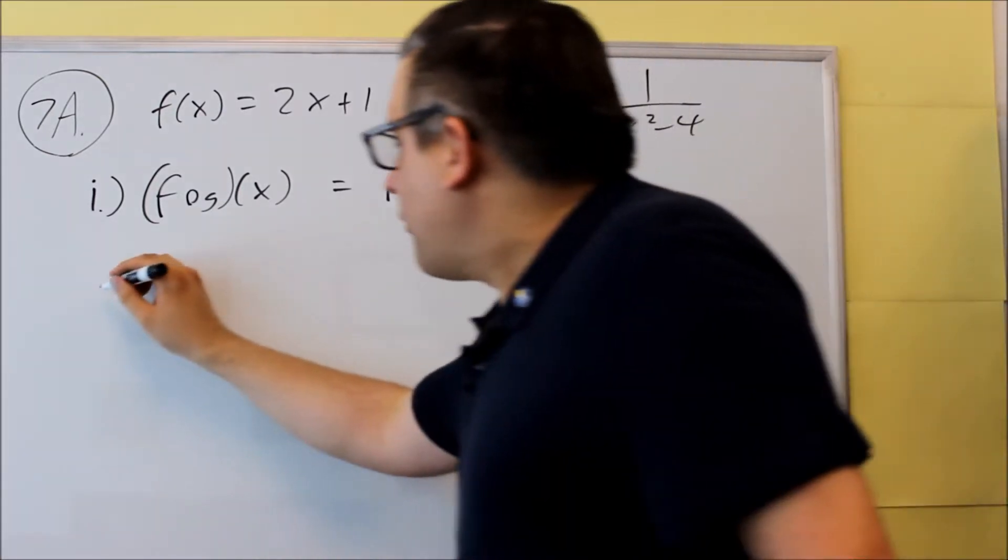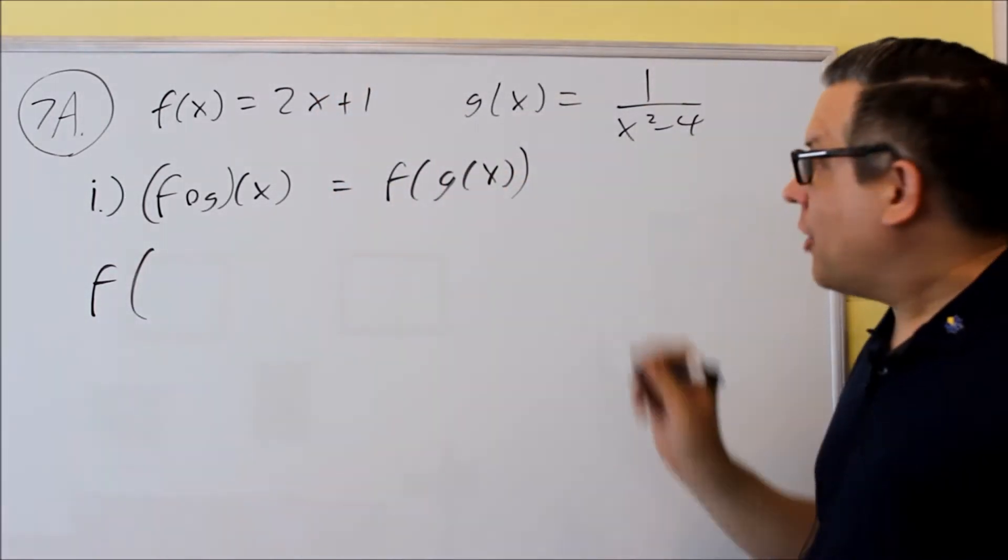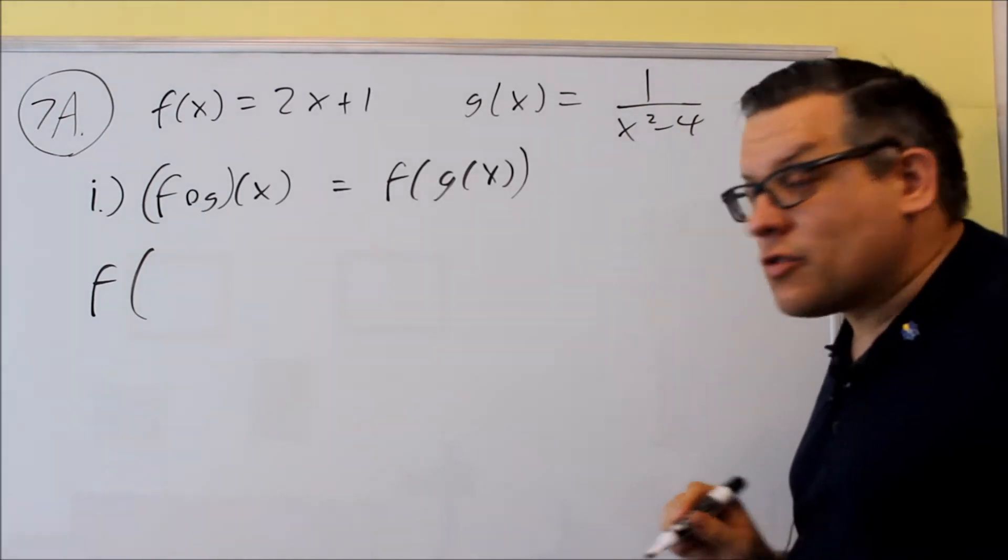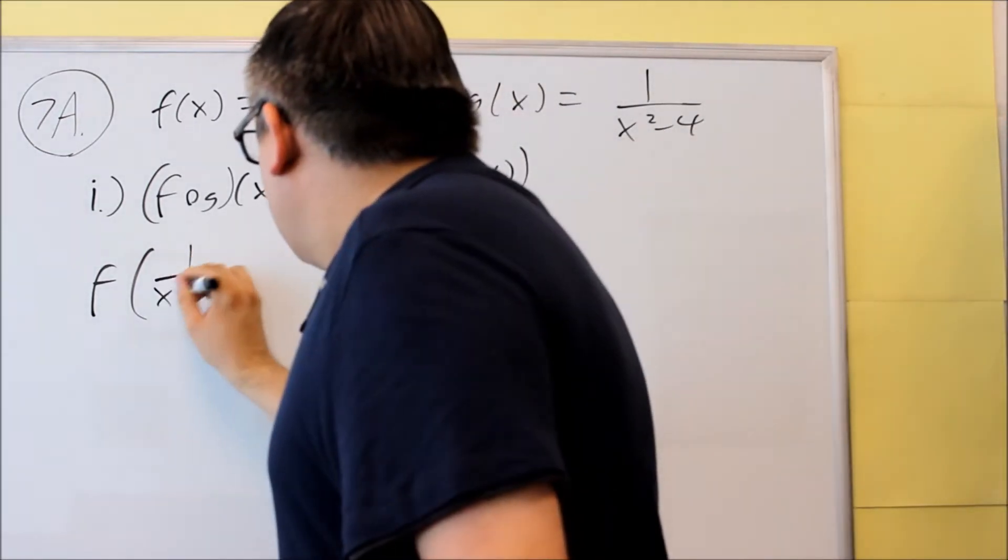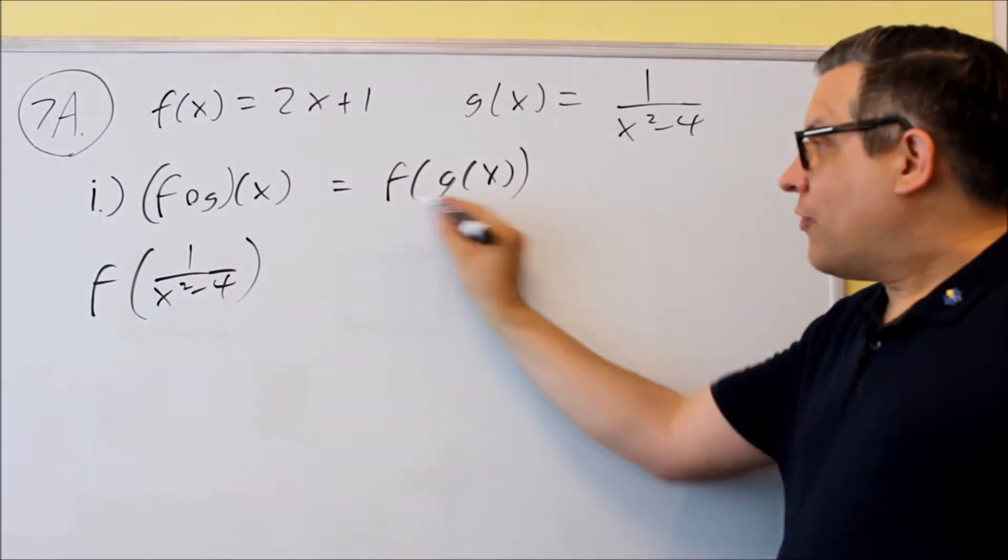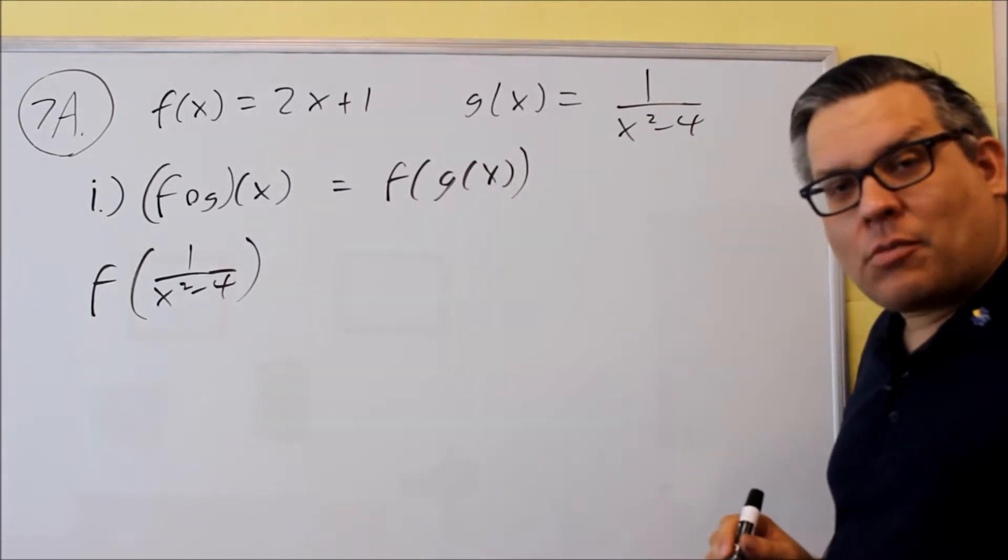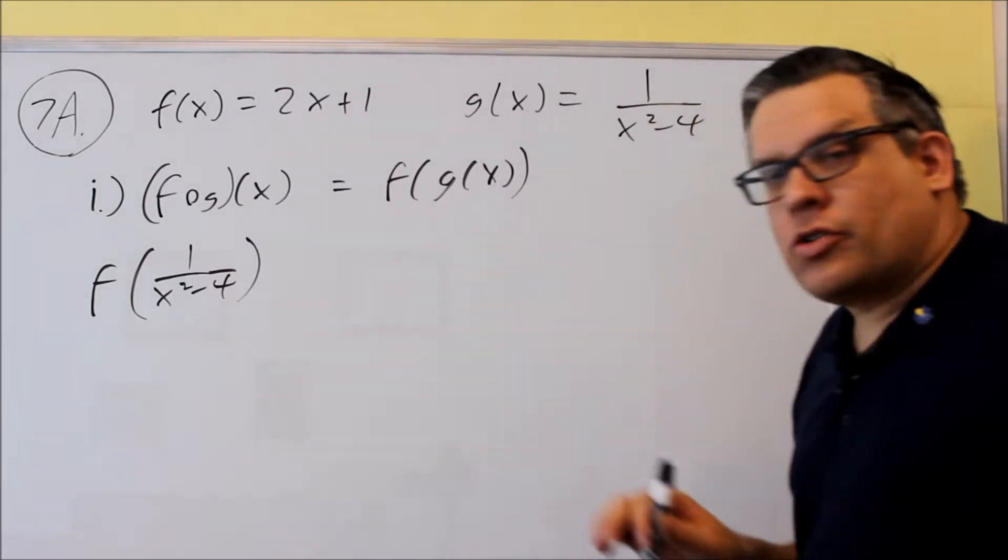So here's how we're going to first start by setting that one up. We're going to remove the g of x from there and replace it with this, 1 over x squared minus 4. So it's going to look like that. Okay, we have f, we replace the g of x with the formula.